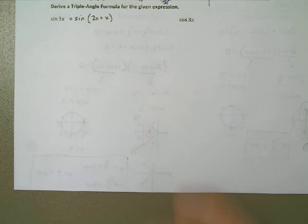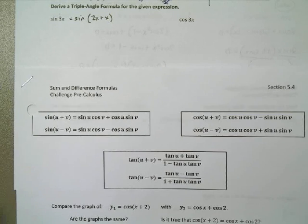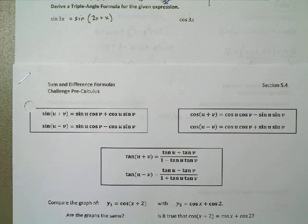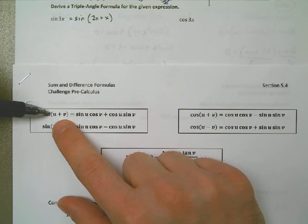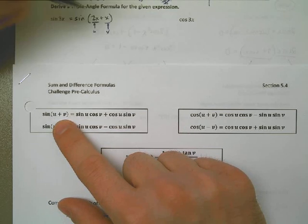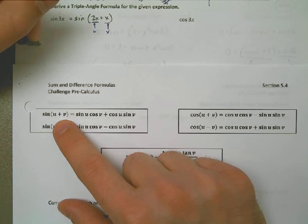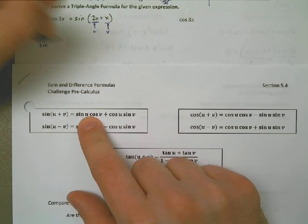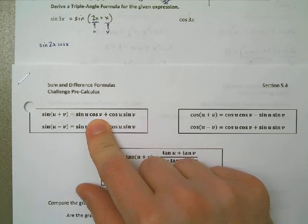Because I can write it like this, I can use the sum formula from the last lesson, 5.4 — the sine of two angles added together. I can use this formula if I call 2x as u and x as v. So the sine of 2x plus x would be sine of u, that's 2x, cosine of v, that's cosine x, plus cosine of 2x times sine of x.